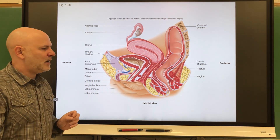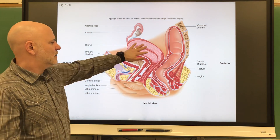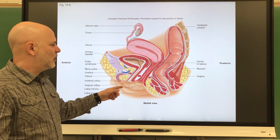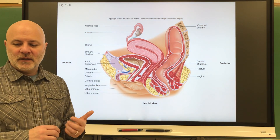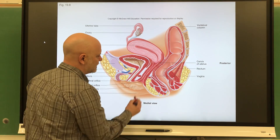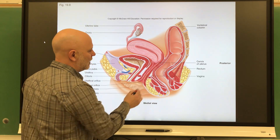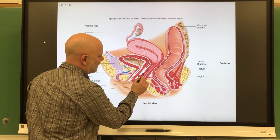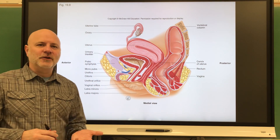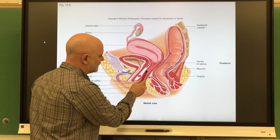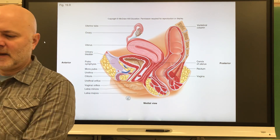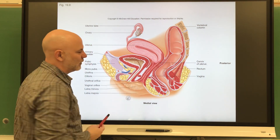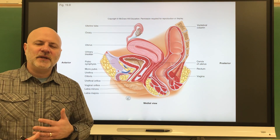Functions of the vagina: it transports uterine secretions such as the menstrual flow; it receives the erect penis during sexual intercourse; and it provides an open channel for offspring during birth. The layers of the vagina include a fibrous layer that attaches it to surrounding organs and tissues, a muscular layer made of smooth muscle that helps close the vagina, and the mucosal layer, which is the inner lining. The mucosal layer contains rugae — these ridges stimulate the penis during sexual intercourse.